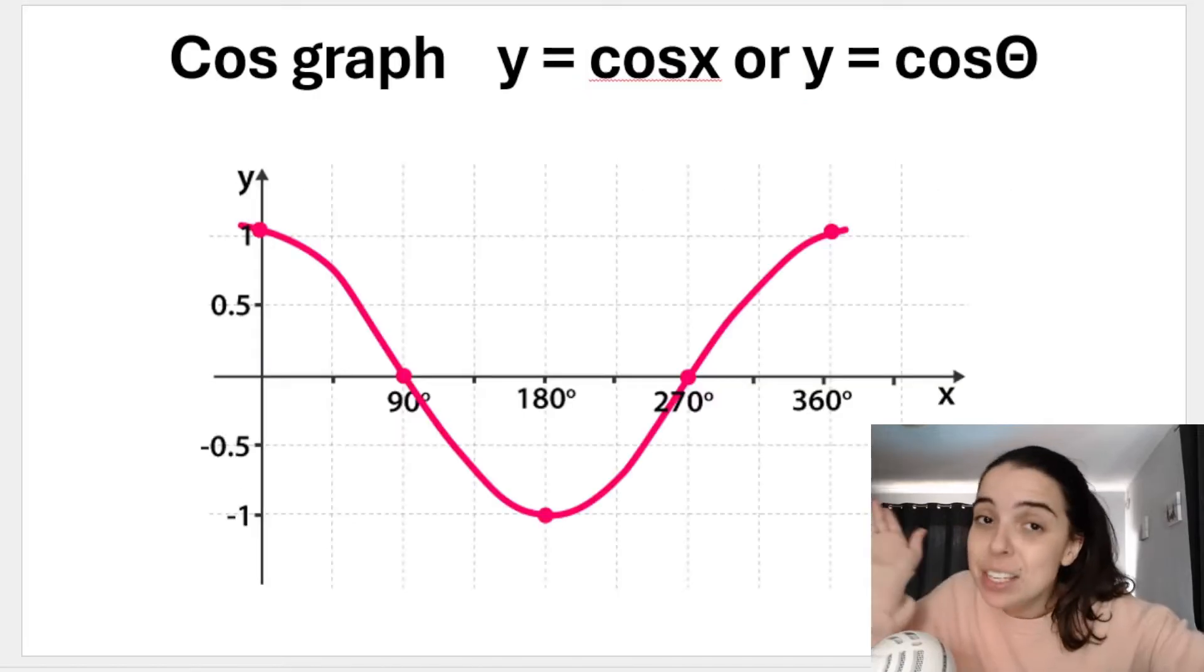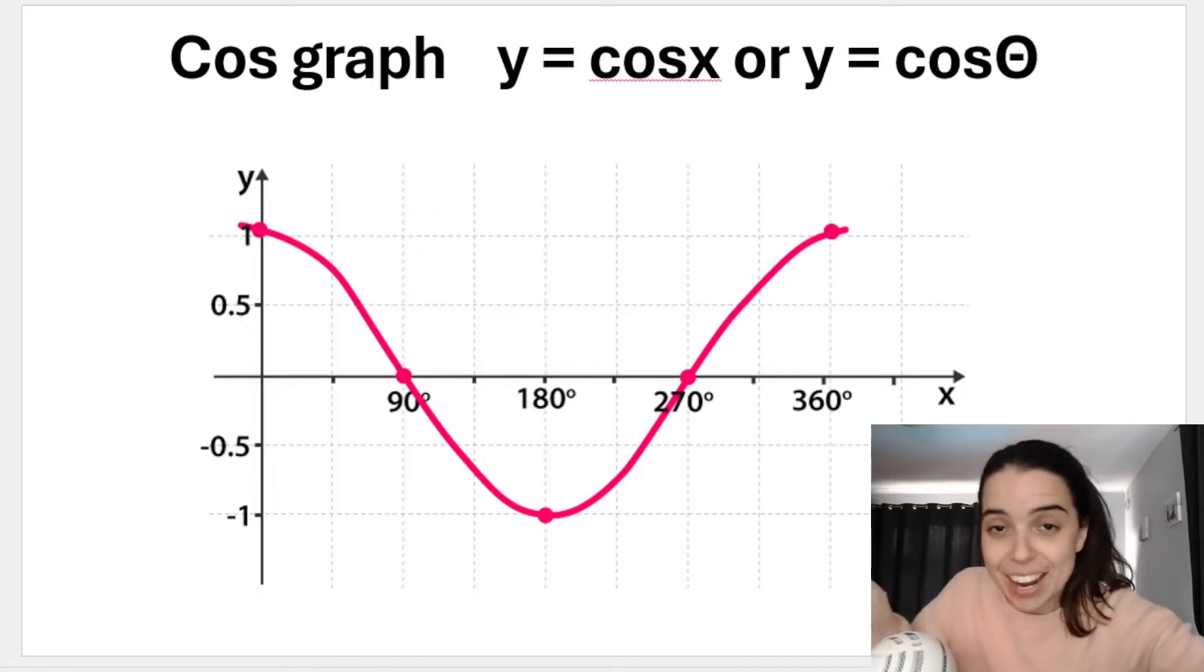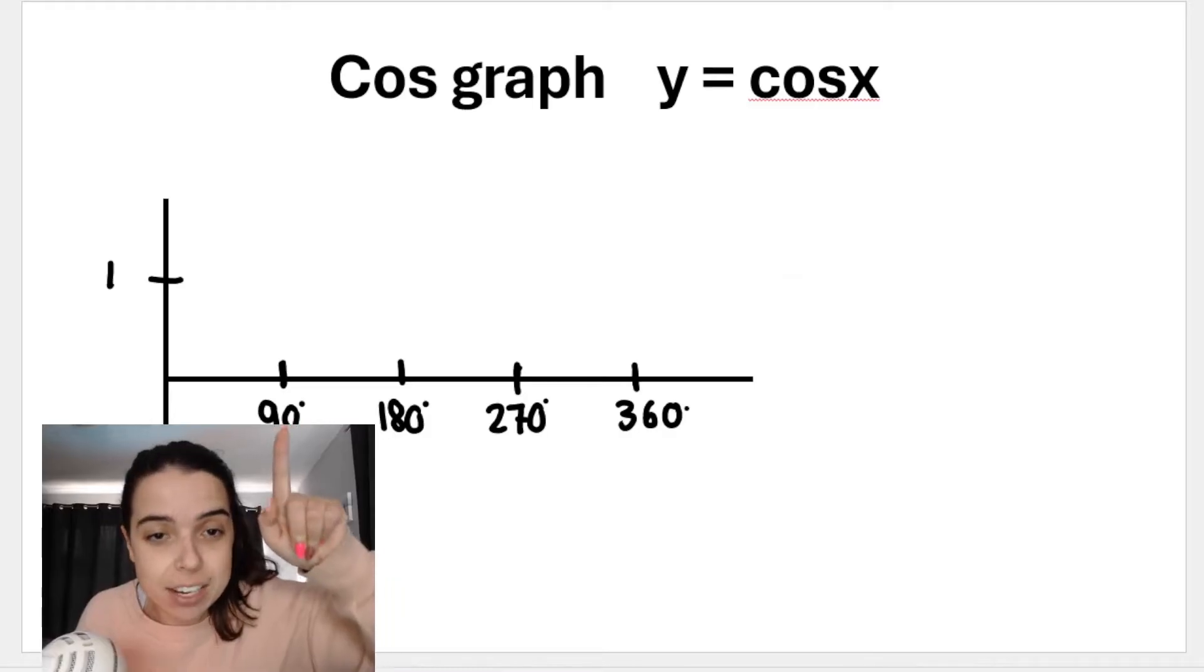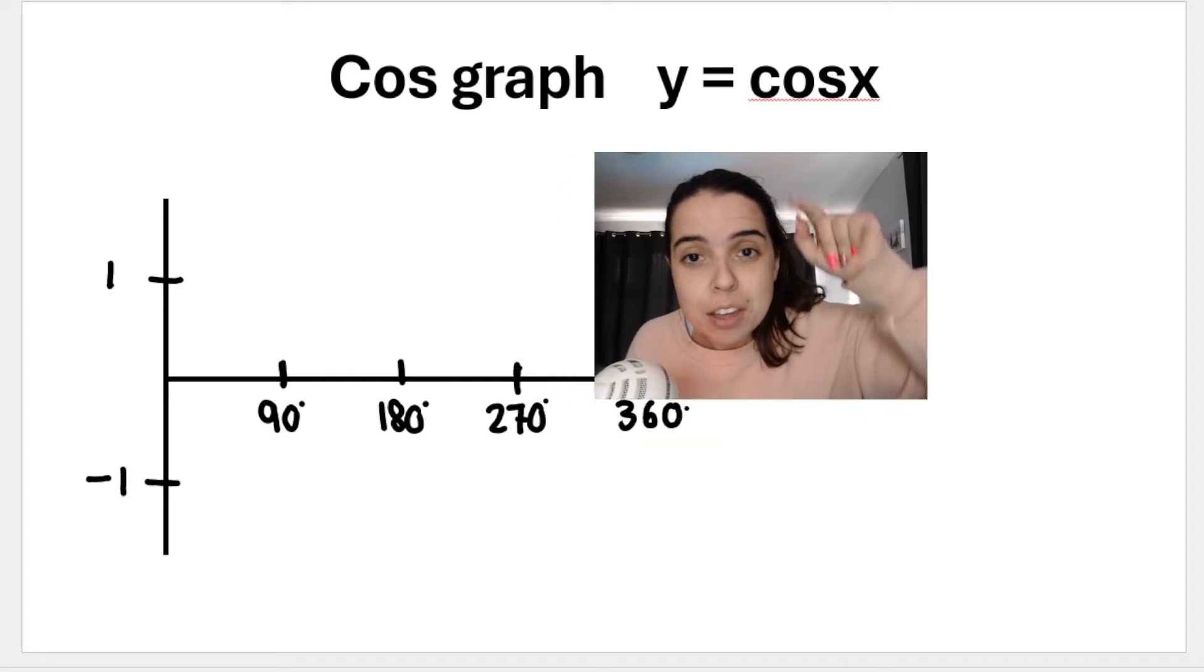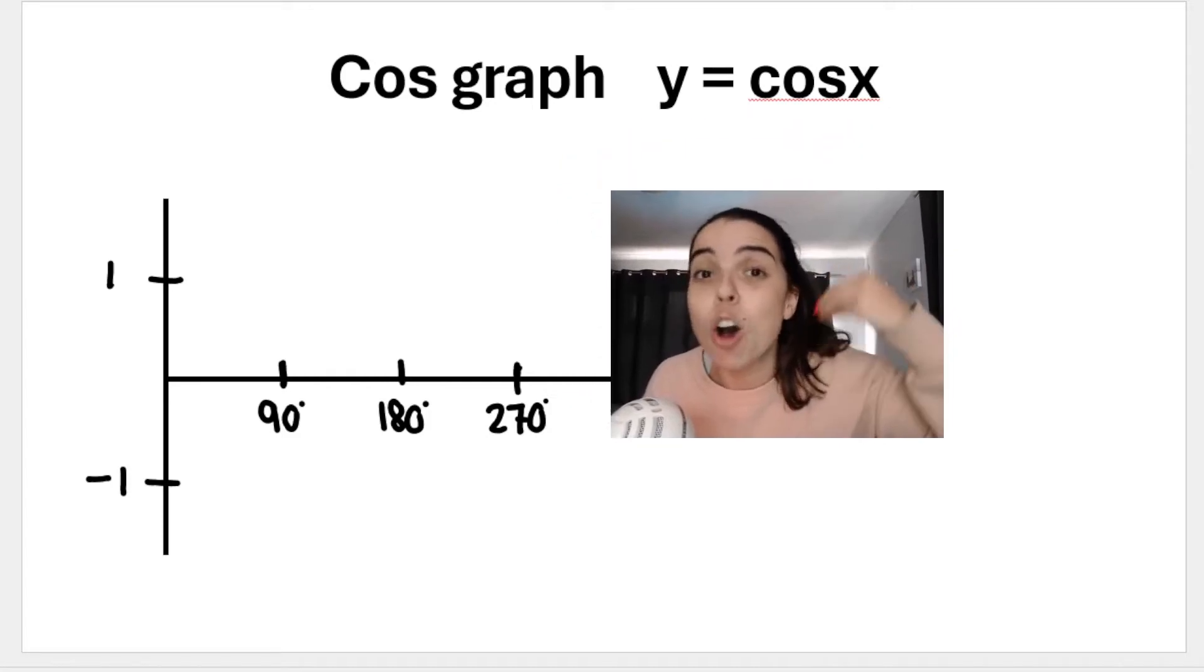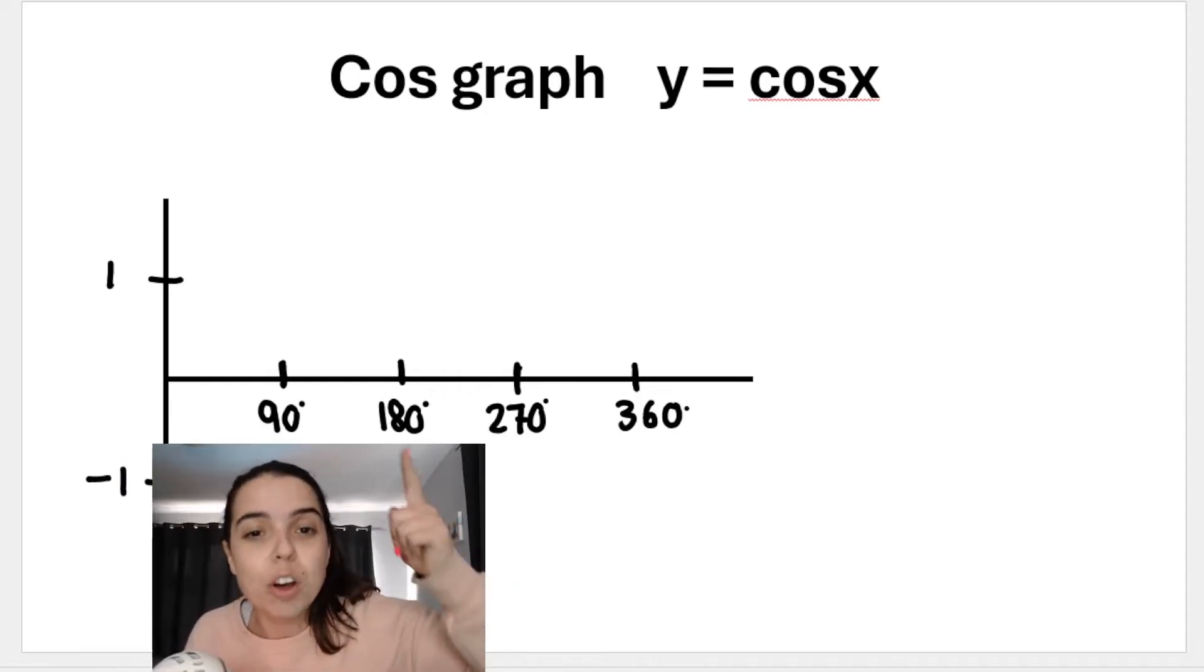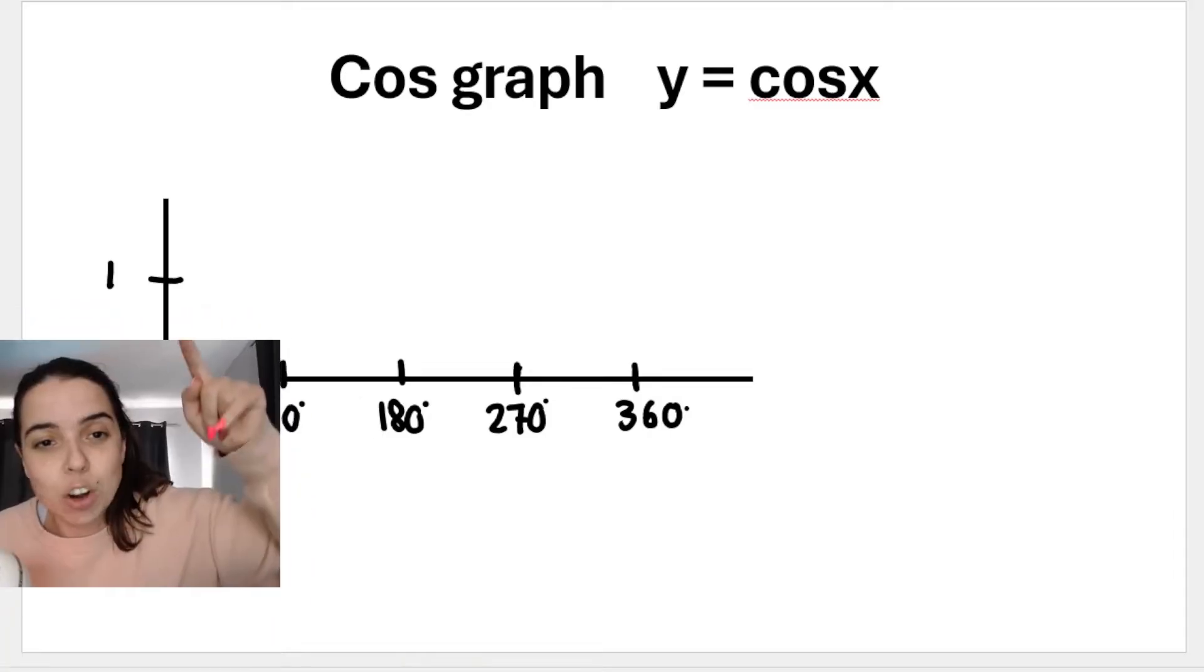This is what the basic cos graph y equals cos x or y equals cos theta looks like. Just like with the sin graph, we plot in 90 degrees, so it's going up in steps of 90. These are my x values; they go in the place of x, they are degrees. So we will type into our calculators cos of 90 equals, cos of 180 equals, and so on. On my y-axis I go up in units of one.